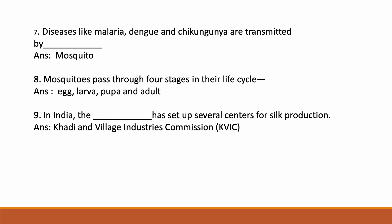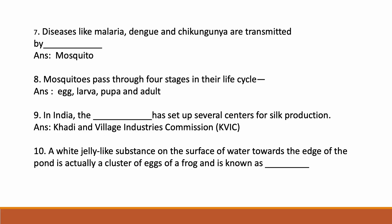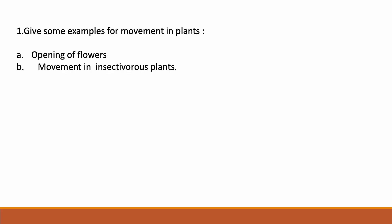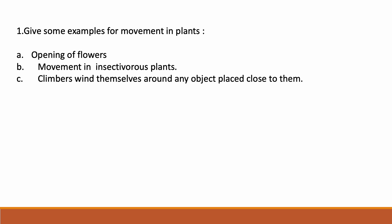A white jelly-like substance on the surface of water towards the edge of the pond is actually a cluster of eggs of a frog and is known as spawn (S-P-A-W-N). Examples of movement in plants: opening of flowers, movement in insectivorous plants, and climbers winding themselves around any object placed close to them.